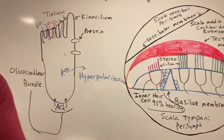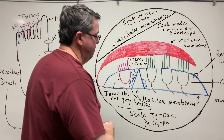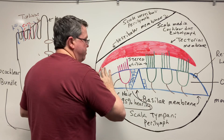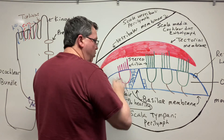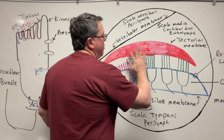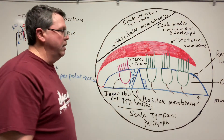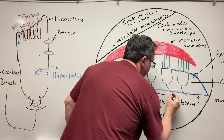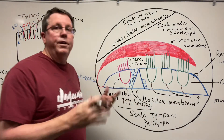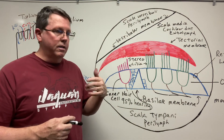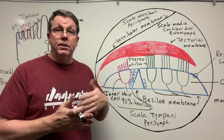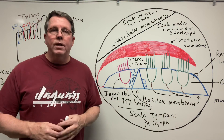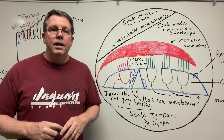So on the organ of Corti: vibrations cause the basilar membrane to move up, creating shearing of the stereocilia against the tectorial membrane, sending a signal to the brain so you can hear. The nerves coming from the hair cells form the cochlear nerve, which meets the vestibular nerve from the vestibular apparatus to form the vestibulocochlear nerve — cranial nerve VIII. That's basically it for the organ of Corti. If you liked the video, please hit like and subscribe. Thank you for watching.